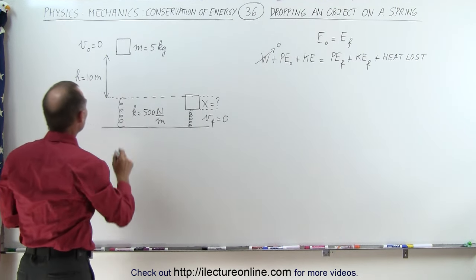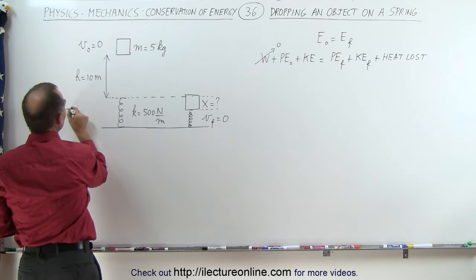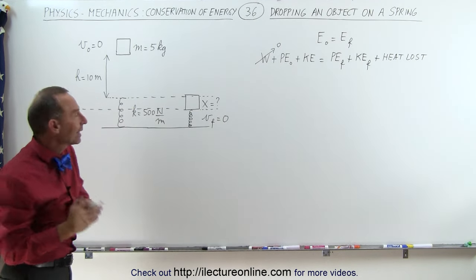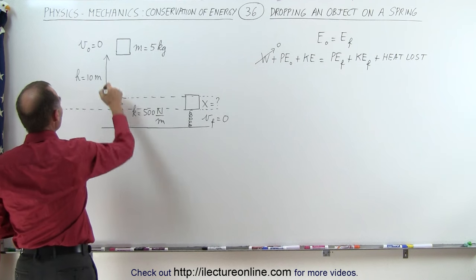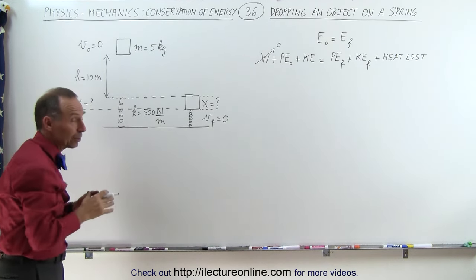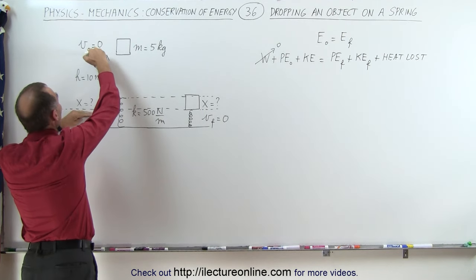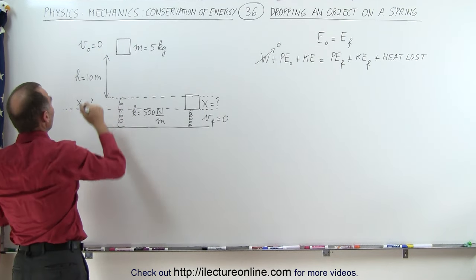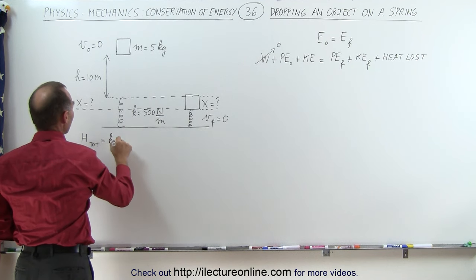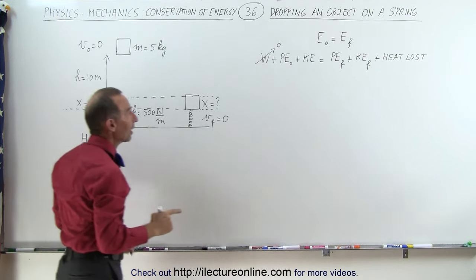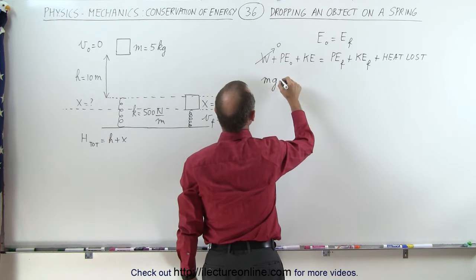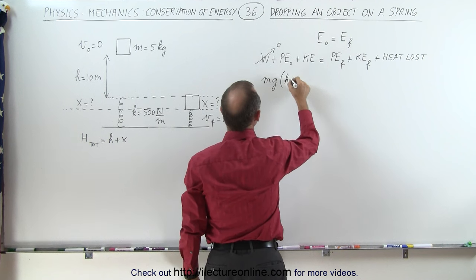Now what we could do is we could have a reference height right here which is equal to the position where the object will finally end up. So we have a height of 10 meters plus we have an additional distance which we don't know yet. It's equal to x and so we can say that this is the total height of the object. So h total is simply equal to h plus x which means that the initial potential energy it has is equal to mg times h plus x.